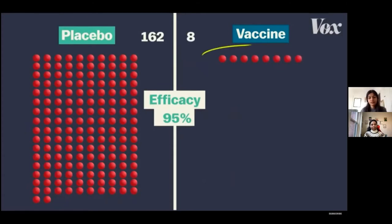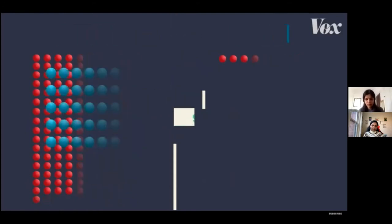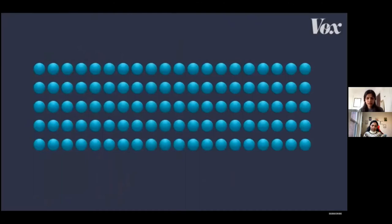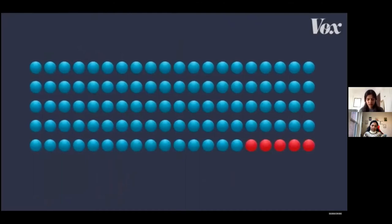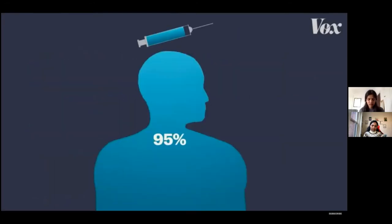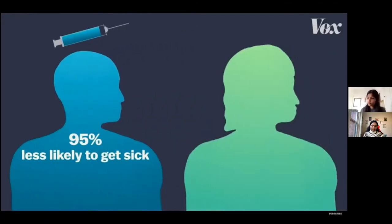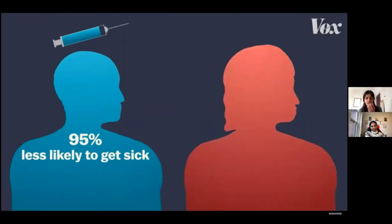How those people fall into each group determines a vaccine's efficacy. With this particular trial, there were 162 in the placebo group and just eight in the vaccine group, meaning those who had the vaccine were 95% less likely to get COVID-19. The vaccine had a 95% efficacy. This doesn't mean if a hundred people are vaccinated, five of them will get sick — that 95% number applies to the individual each time they're exposed to COVID-19.